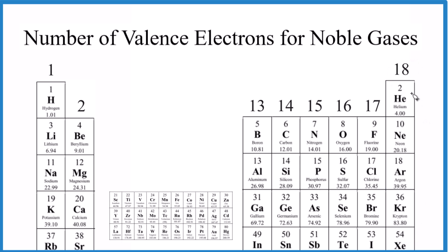So the trend for valence electrons for all of the elements here, except for the transition metals, is pretty simple. Group 1, all of these have one valence electron. Group 2, two valence electrons.